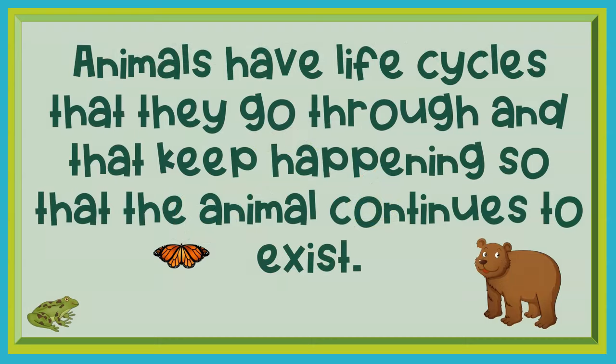Animals have life cycles that they go through, and these cycles keep happening so that the animal continues to exist. Remember that a life cycle is the stages that an animal goes through from birth to death. It is called a cycle because it continues on and on and on.